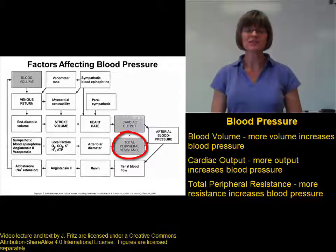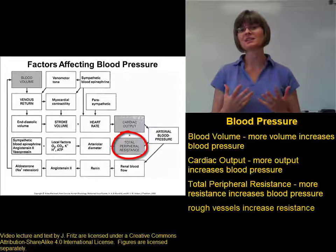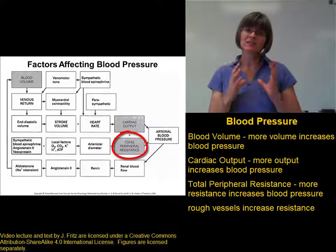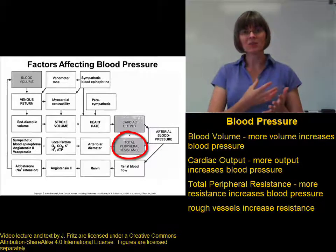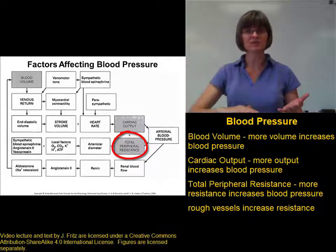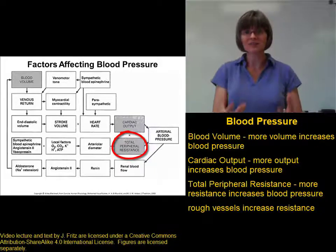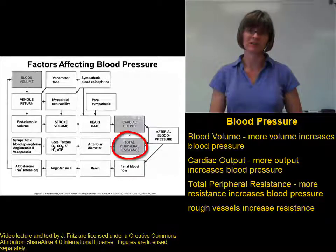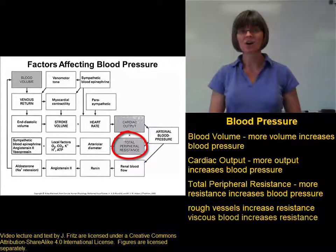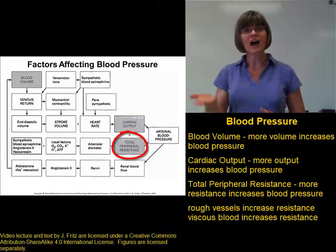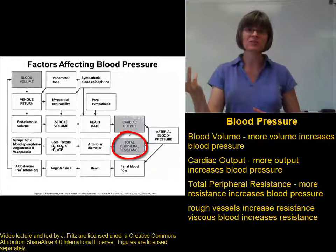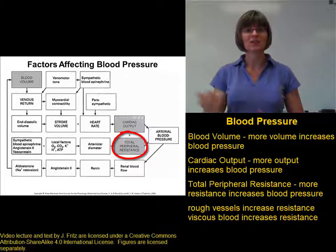Total peripheral resistance depends on several things, including the condition of the blood vessels. If the inside of the blood vessels are very smooth, then blood will flow very easily, reducing resistance and reducing blood pressure. The more roughened or the more deposits that build up inside the blood vessels, the more resistance there will be and the higher the blood pressure. Blood viscosity also affects pressure because viscosity is resistance to flow. The higher the viscosity of the blood, the more it resists flow and the higher the blood pressure will be. Less viscous blood will flow more easily and have lower blood pressure.